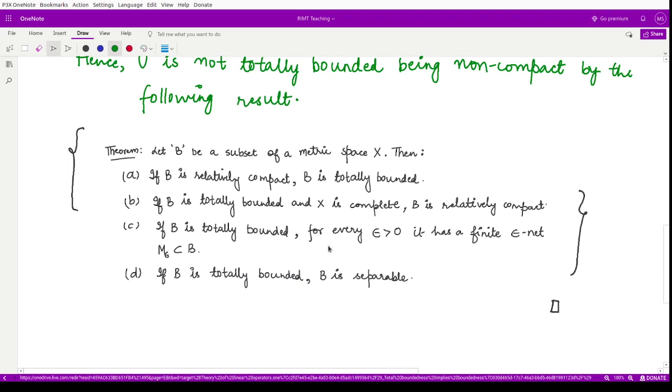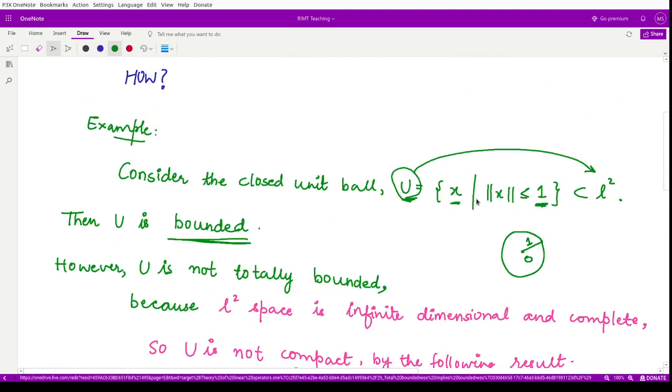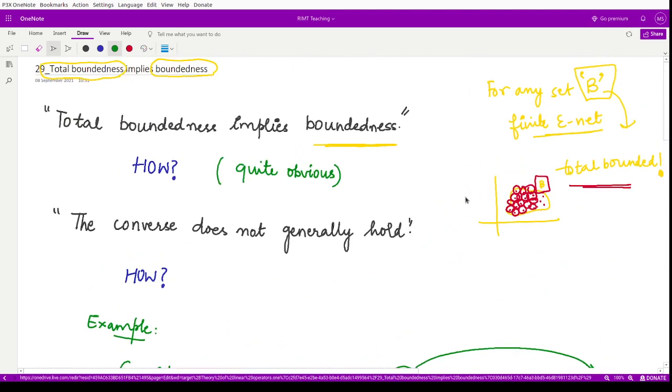This theorem provides us the properties for total boundedness. The result says that every totally bounded set is bounded; however, the converse is not true.